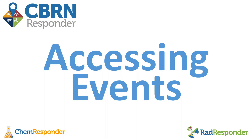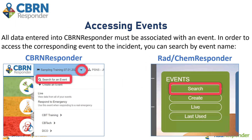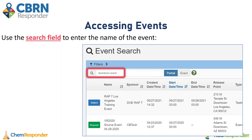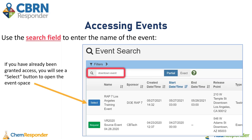Now it's time to actually access the event and search for it. All data entered into CBRNResponder must be associated with an event, so there is no rogue data in CBRNResponder purgatory. In order to access the corresponding event to the incident, you can search by the event name. You can do this by going to the CBRNResponder or hazard-specific pages and clicking the drop-down box next to the event name and clicking Search for an Event, or if you're on one of the hazard-specific pages, you can just click Search from the events tile. You'll use the search field to enter the name of the event. If you already have access to the event, you will see a Select button, which will then allow you to open the event space.